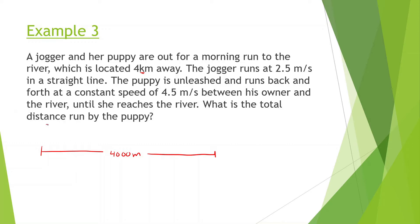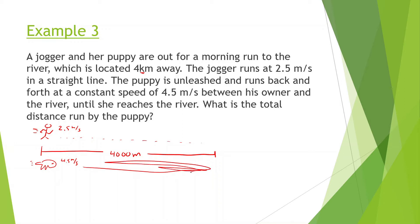We have two situations. We have the jogger running at 2.5 meters per second, and then we have the puppy running at 4.5 meters per second. As this person is jogging, this puppy is running back and forth. It's running with a constant speed of 4.5 meters per second. We want to know when this jogger gets all the way to the river, how far has this dog been running?